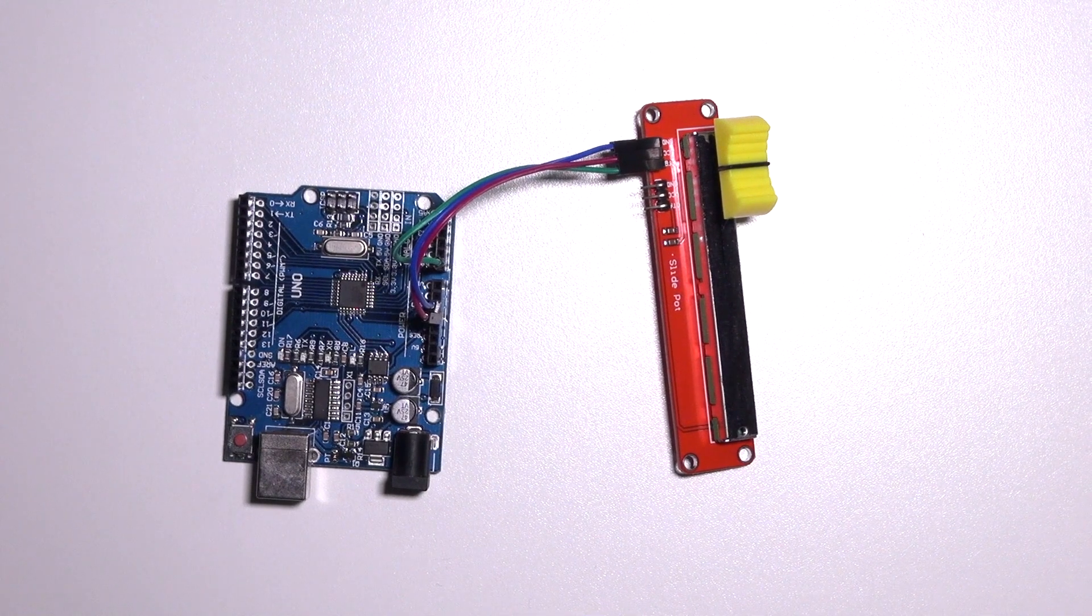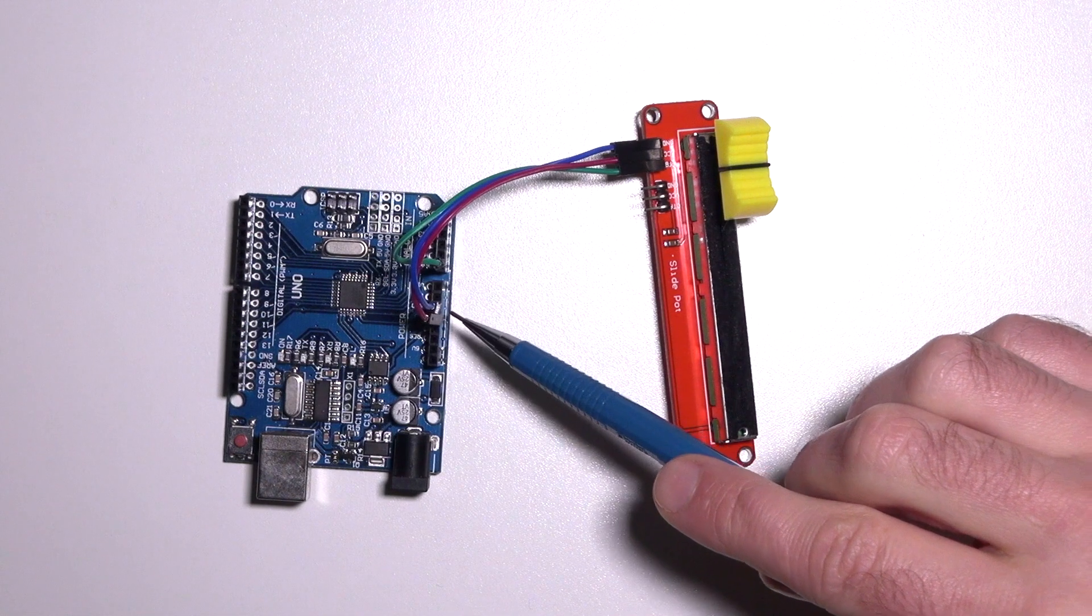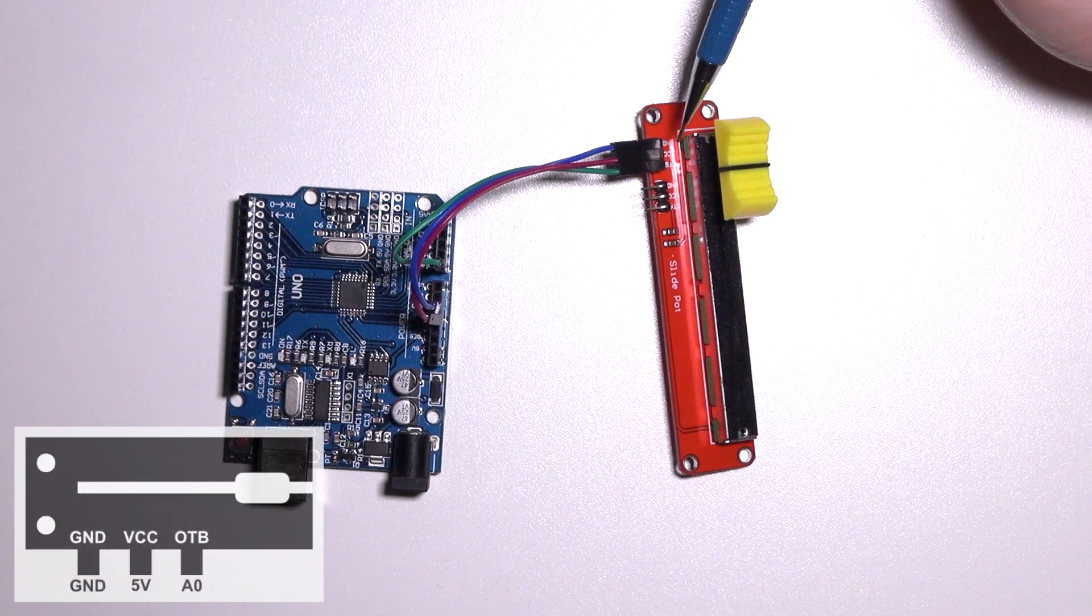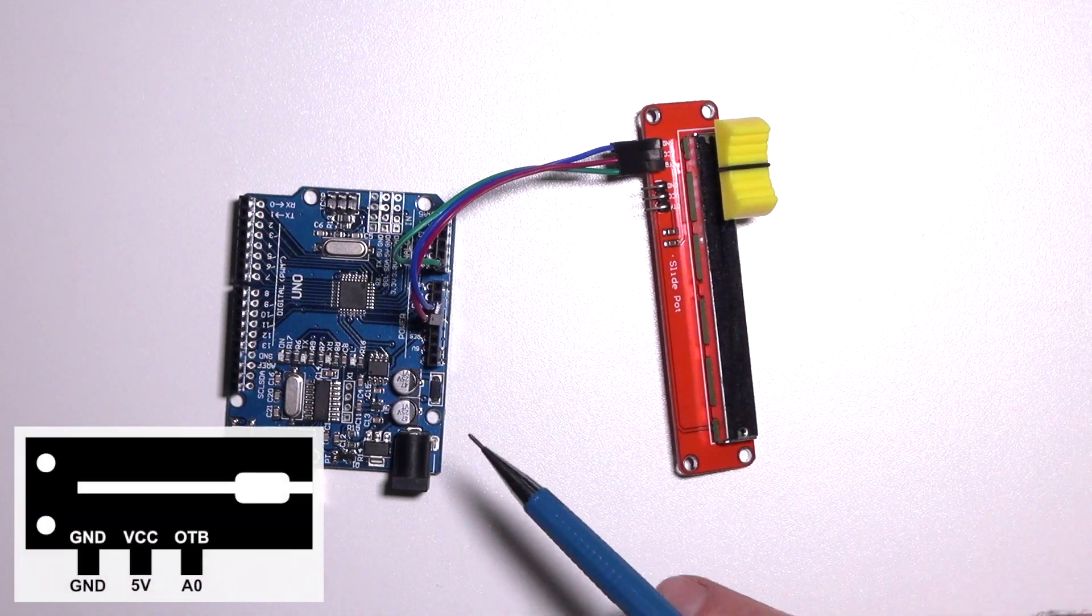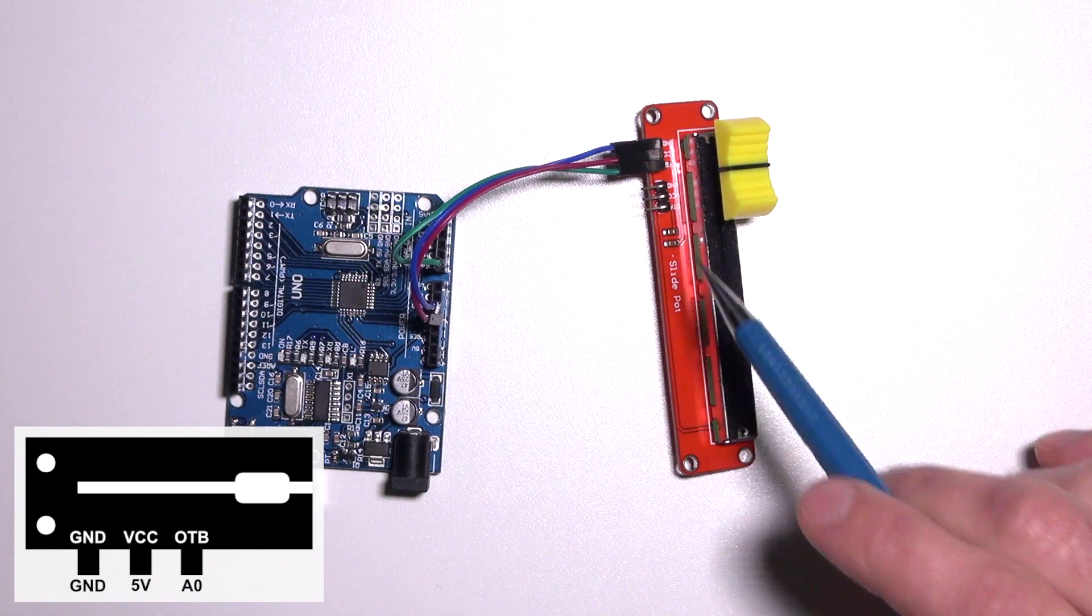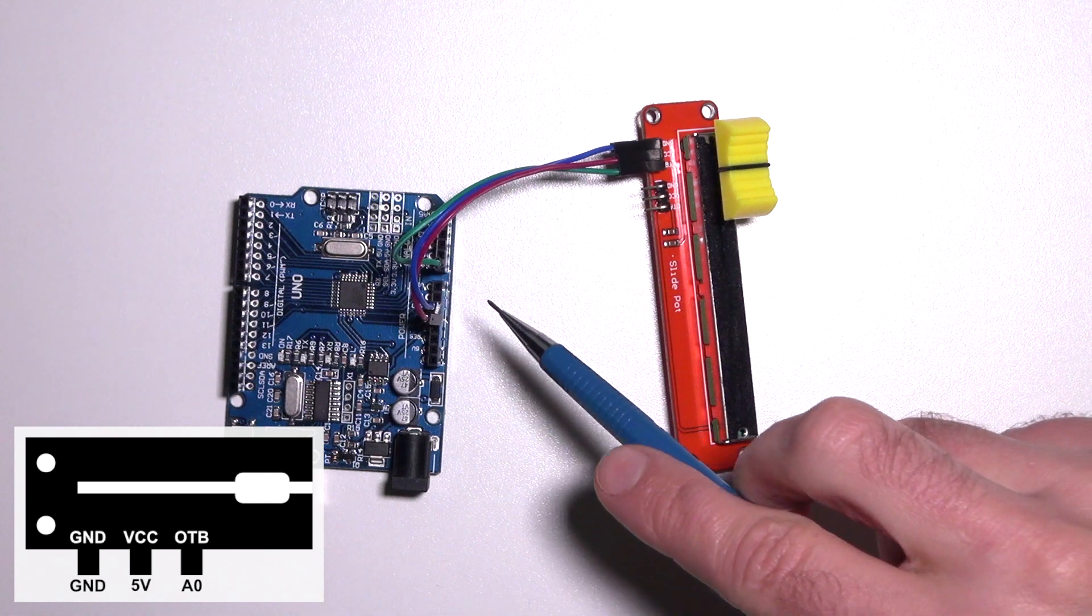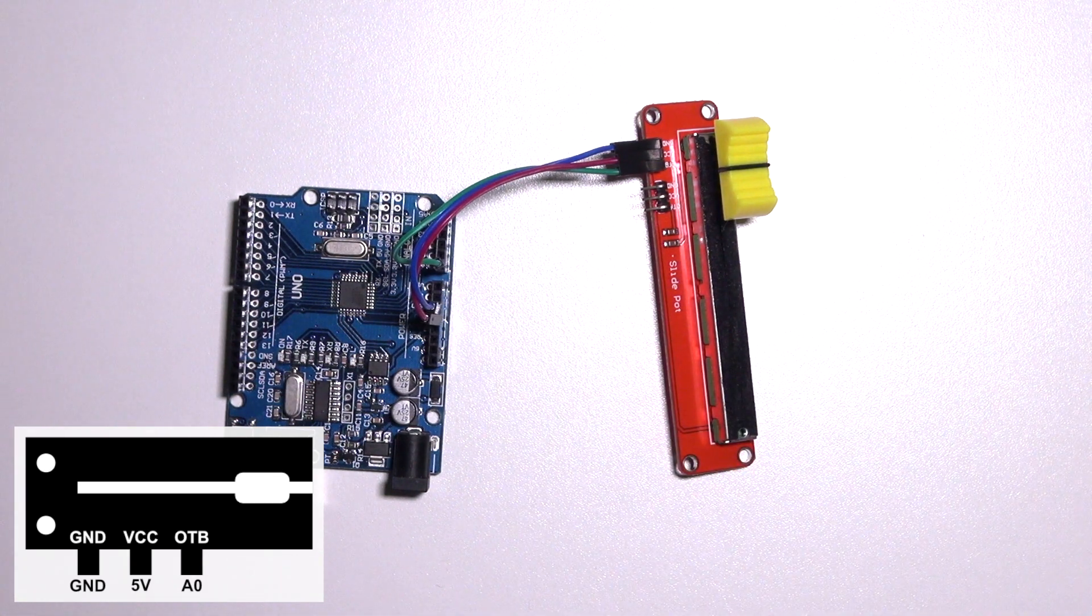Building the circuit is easy. You have the ground which is connected to the ground of my Arduino. You have the VCC which is connected to the 5 volts on my Arduino. And you have the OTB, which is output B, connected to analog in 0.